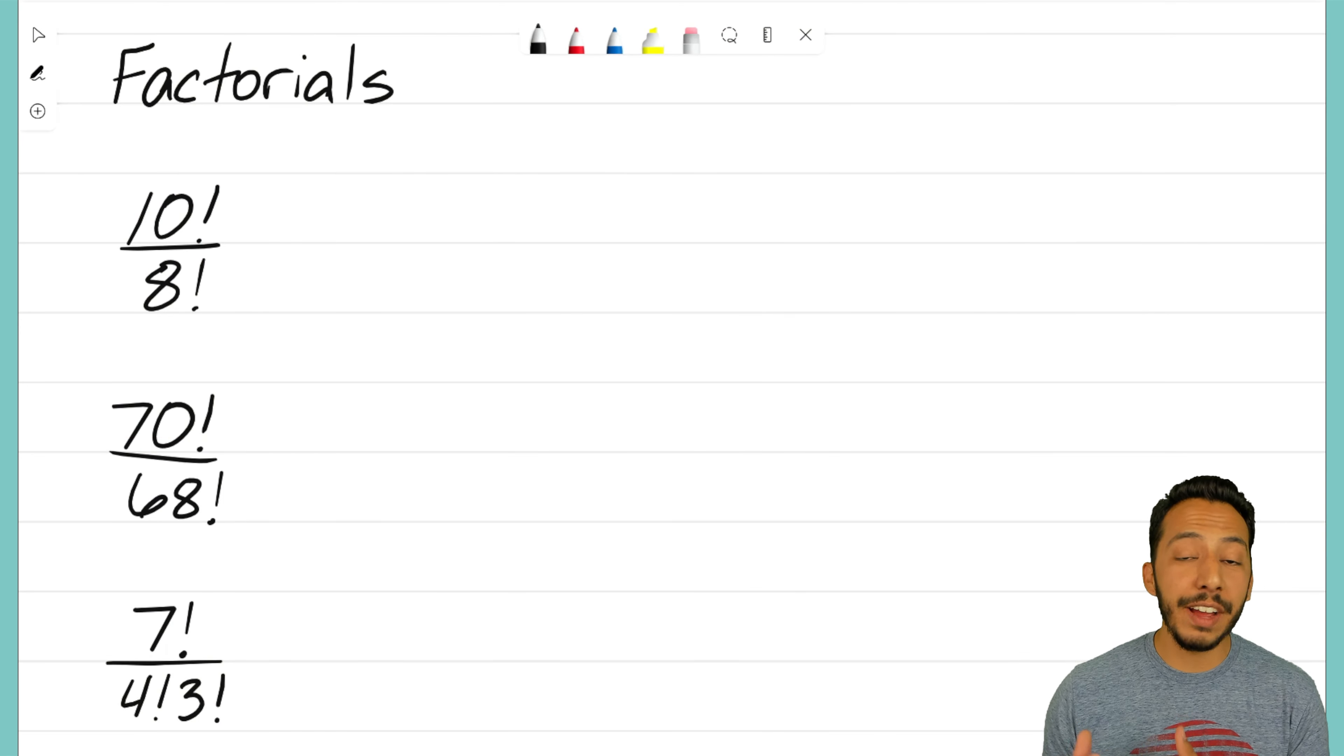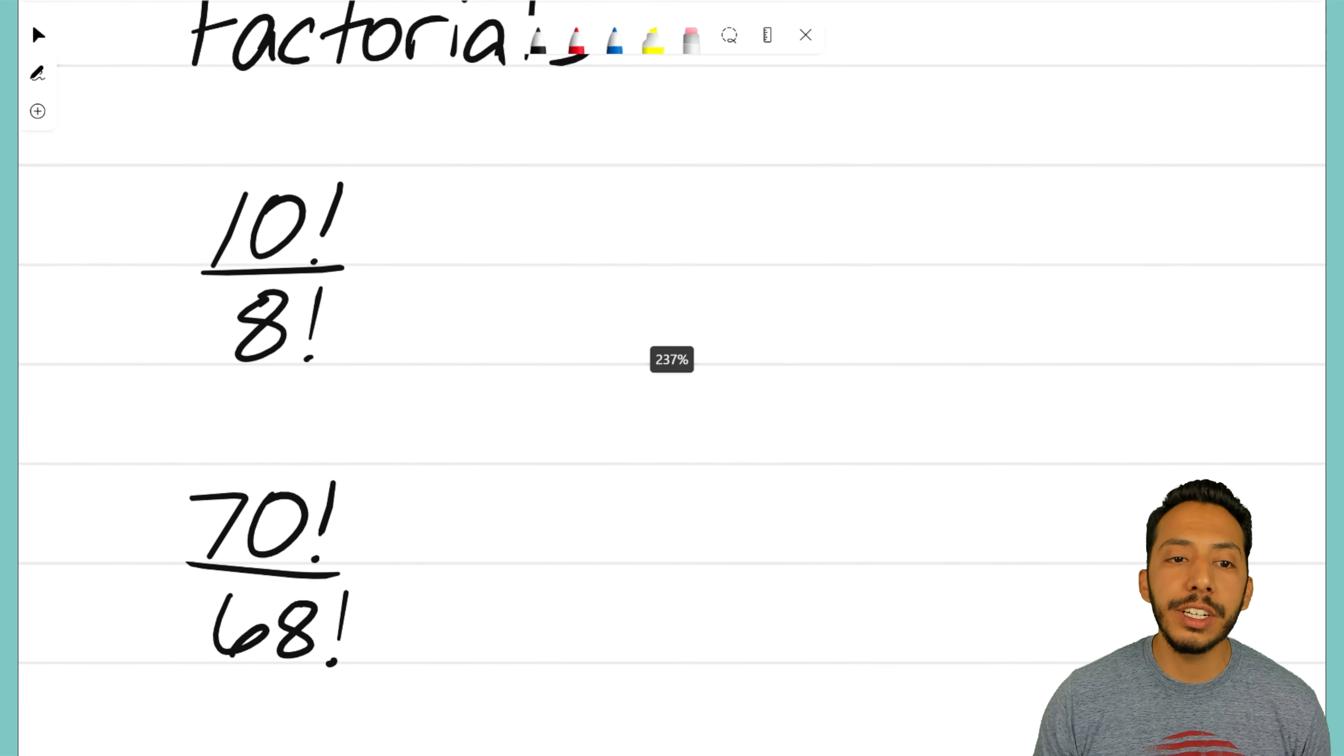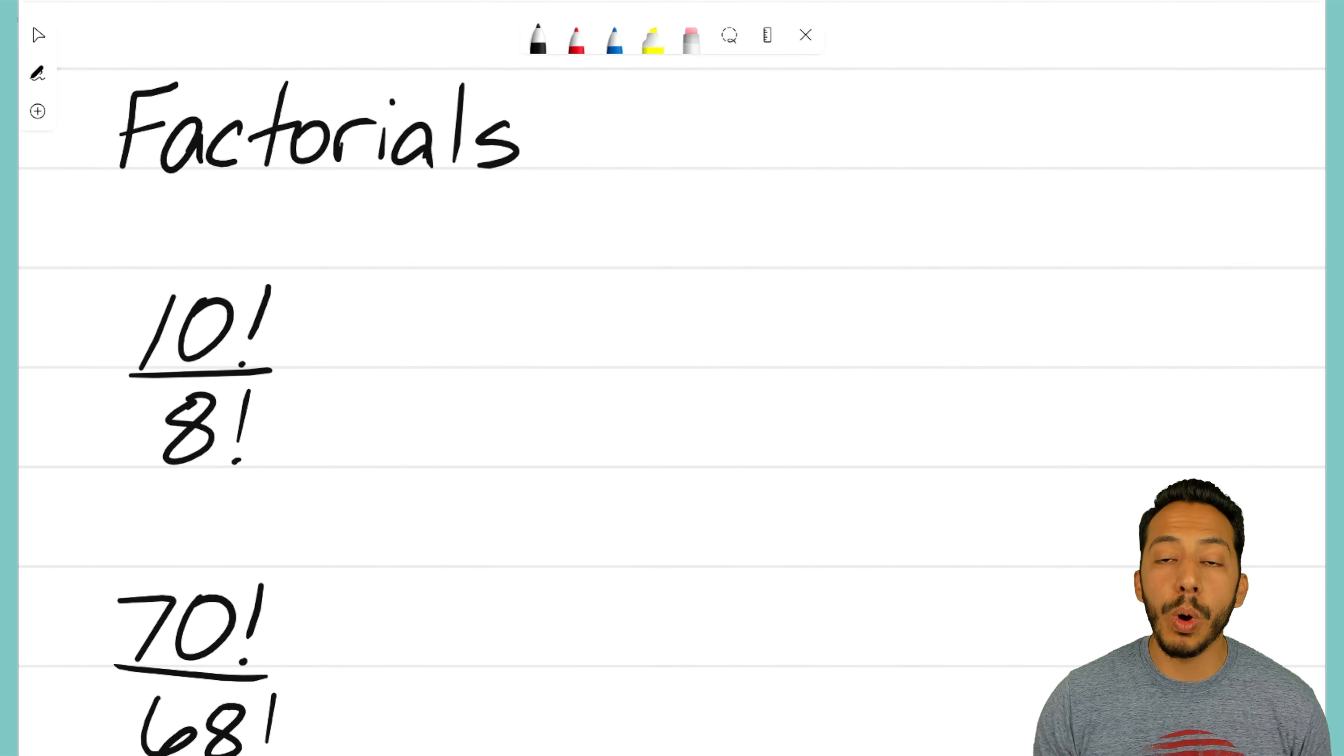Let's jump into this example problem where I have three examples to solve using our knowledge of factorials. I'm going to zoom in on this first one so we can really look at what we have going on. We have 10 factorial being divided by 8 factorial.